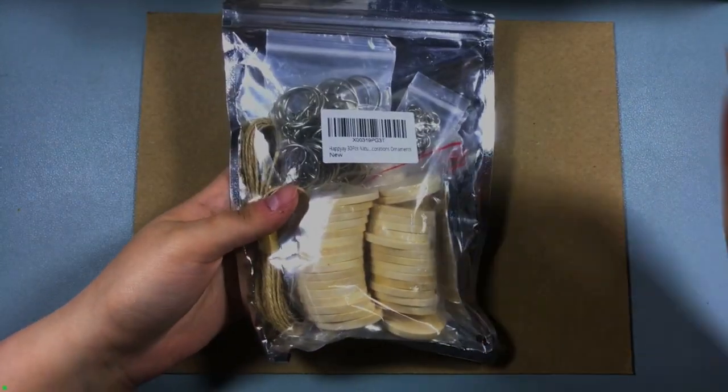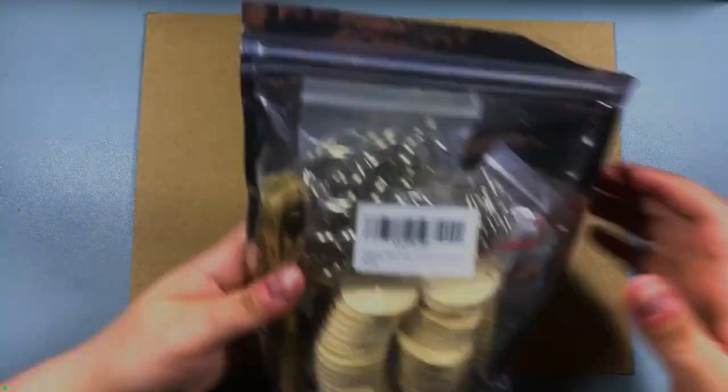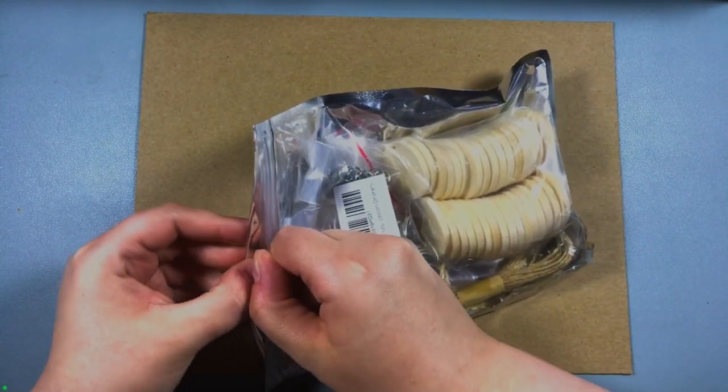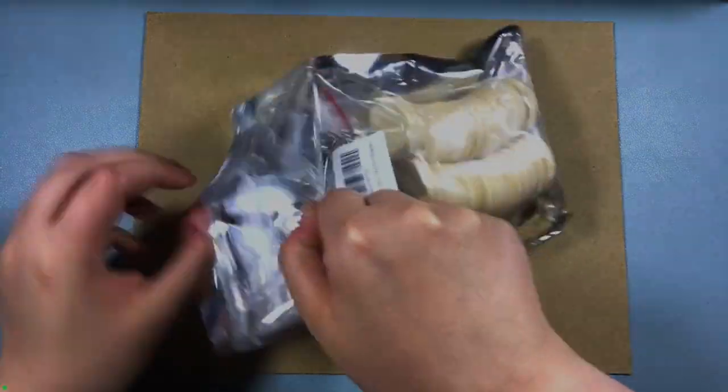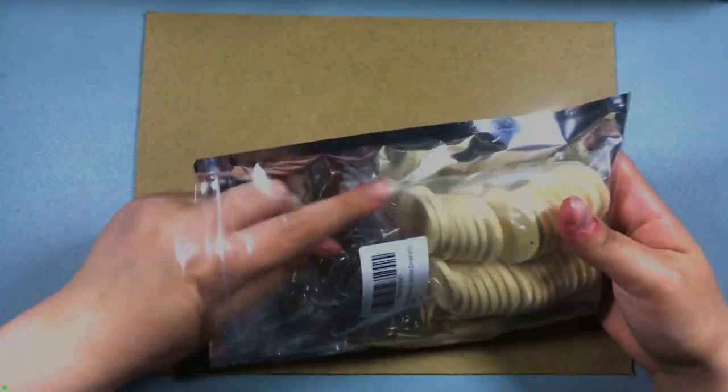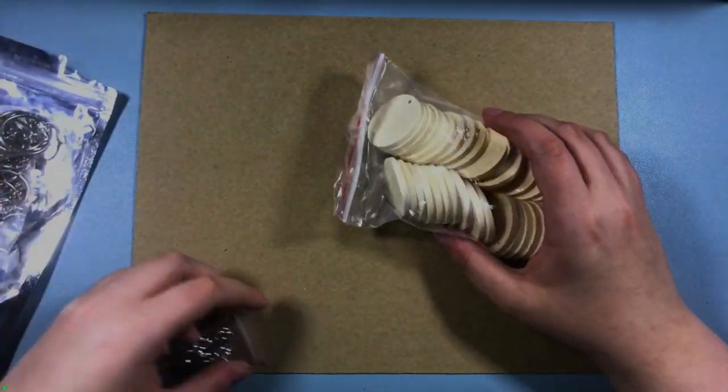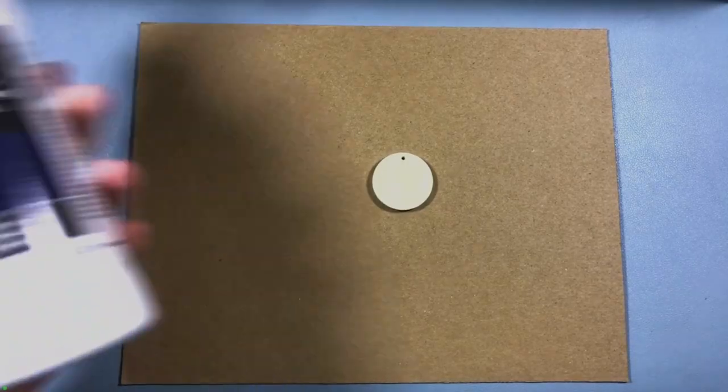My first task at hand was opening up the bag that the keychains came in and picking out which ones I would paint for today. This bag contains 50 wooden keychains with all the chain parts as well as some twine. Since I don't have pliers with me at my Nashville apartment, the metal bits won't be used in today's video.